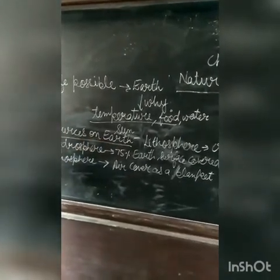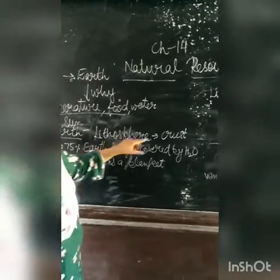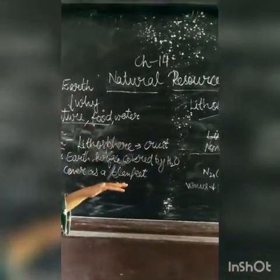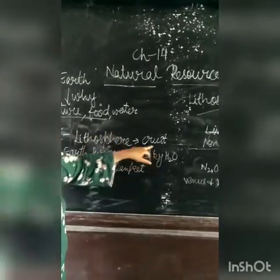So next, the lesson is resources — natural resources on Earth. Resources means natural resources. First we will start from the lithosphere. The lithosphere is the outermost layer of the earth where we get minerals.